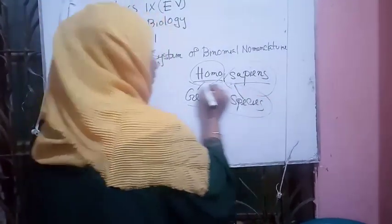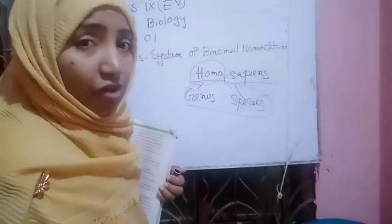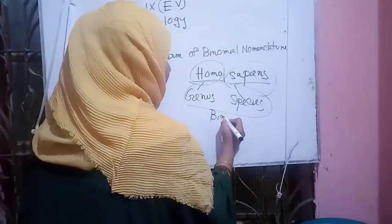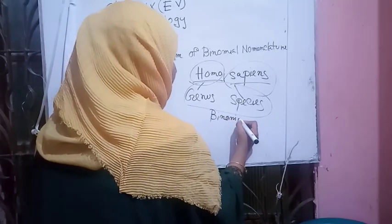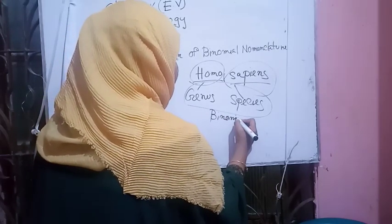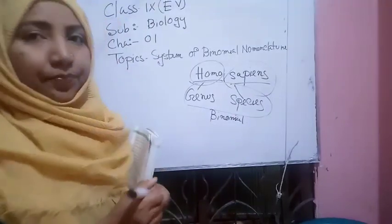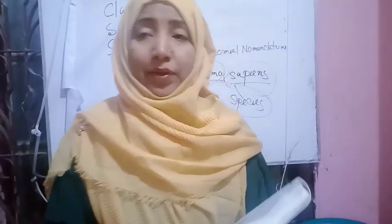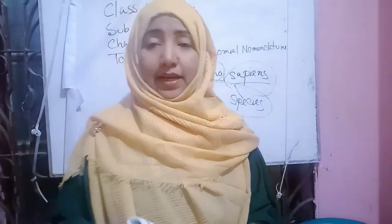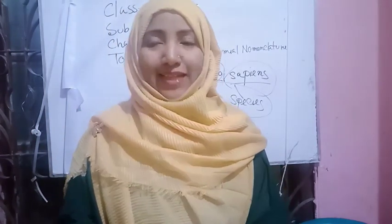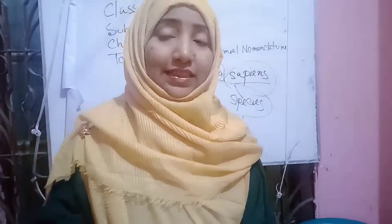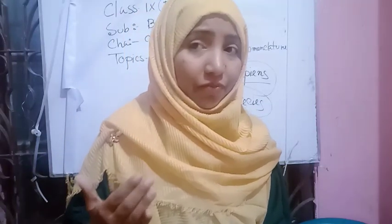These scientific names come from Latin words. Now please open your books to page number 11. The binomial nomenclature: the scientific name of an organism has two parts. The first part denotes the genus to which the species belongs, and the second part identifies the species within the genus.